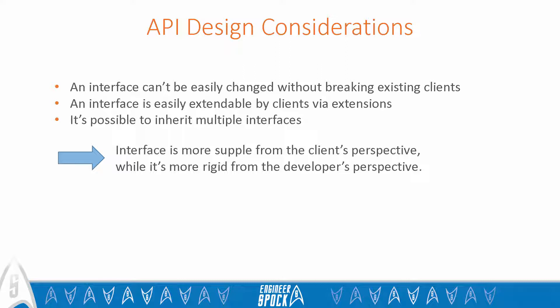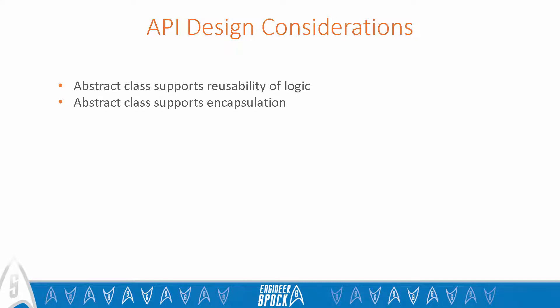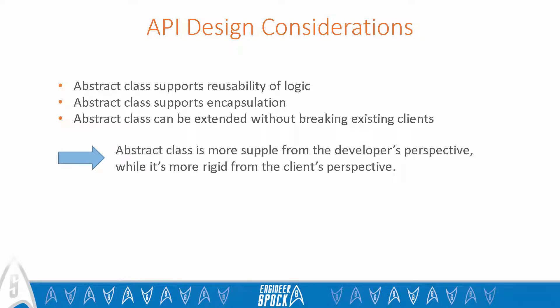An abstract class supports reusability of logic. It supports encapsulation, and it can be extended without breaking existing clients. So in the end, an abstract class is supple from the developer's perspective and more rigid from the client's perspective. With all that said, it becomes clearer why API developers so often use abstract classes for building internal APIs, while using interfaces for providing external points of extension.